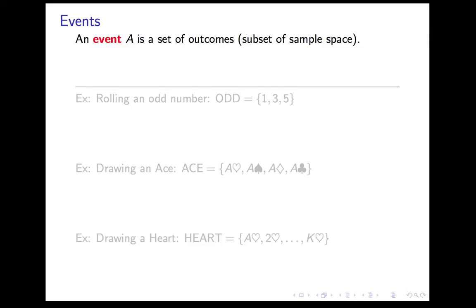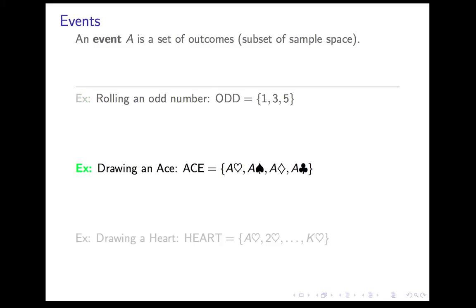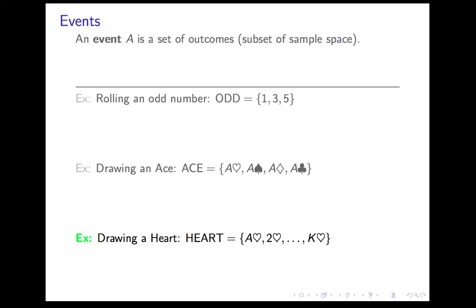So how do we work with probability models? The basic thing we talk about is an event. Events are generally represented by uppercase letters. An event A is a subset of the sample space — it's something that may or may not happen each time you do the experiment, and the set corresponding to the event is the set of all outcomes that count as that event happening. For example, rolling an odd number is an event consisting of outcomes 1, 3, and 5. Drawing an ace is an event consisting of those four aces. Drawing a heart consists of 13 cards.